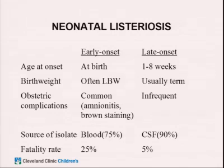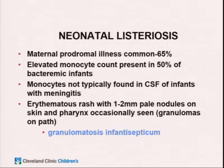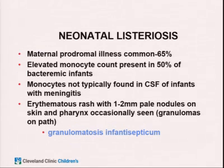Neonatal listeriosis acts just like Group B Strep — there's a classic early onset form and a late onset form, with manifestations nearly identical clinically and epidemiologically. The clue to maternal Listeria is a maternal prodromal illness, usually abdominal pain and diarrhea. An elevated monocyte count is found in about half of bacteremic babies — this is Listeria monocytogenes, so monocytes appear in blood but not spinal fluid. A rare granulomatous rash called granulomatosis infantiseptica can be seen, with granulomas on pathology.